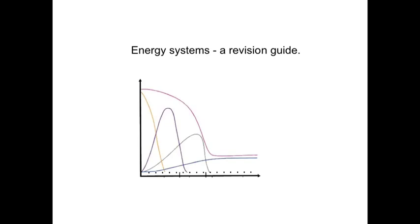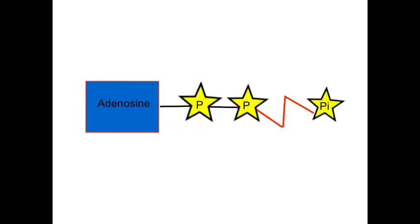This is a revision guide for energy systems in AQA PE Fed 3 section 1. The immediately usable form of chemical energy for muscular contraction is a compound called adenosine triphosphate, or ATP. ATP is made up of an adenosine molecule and three phosphate molecules.